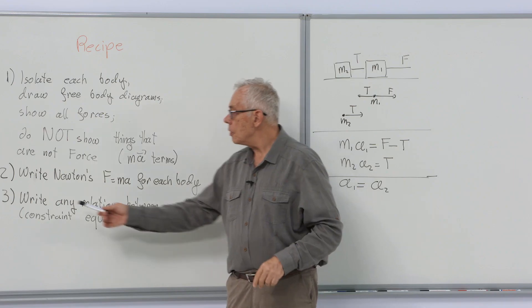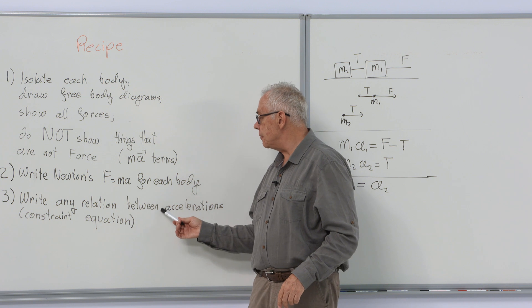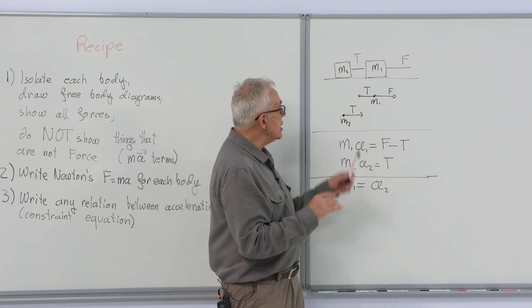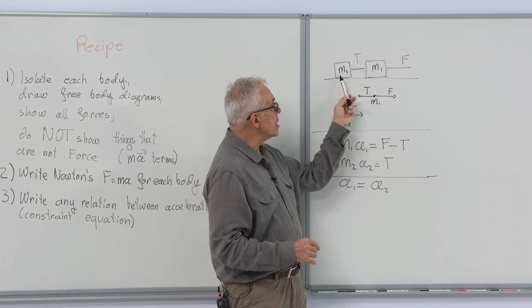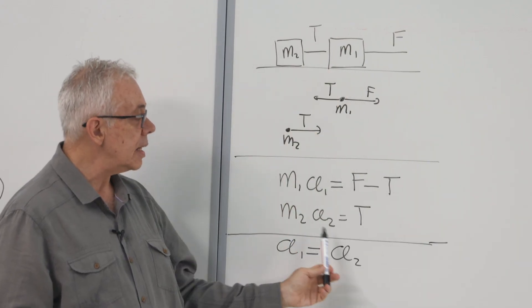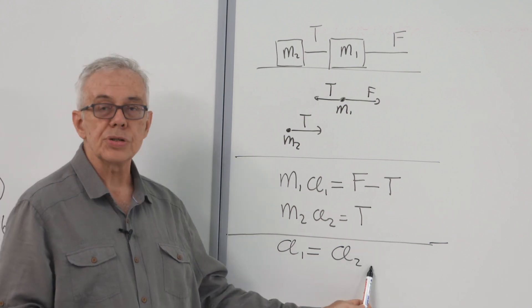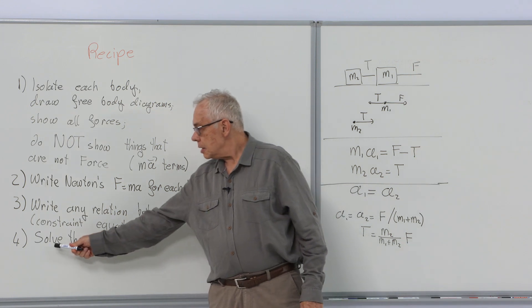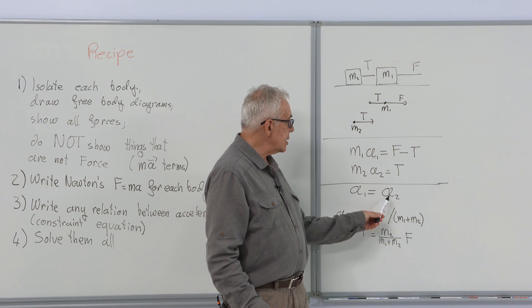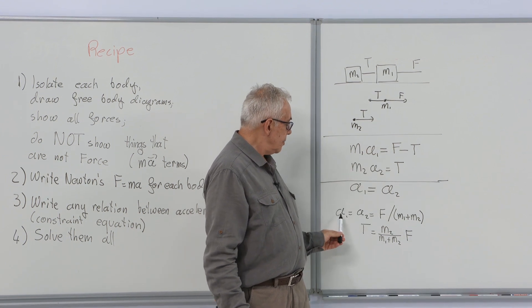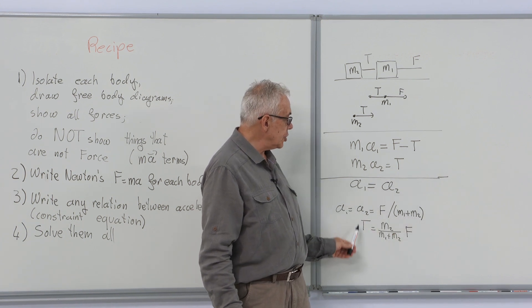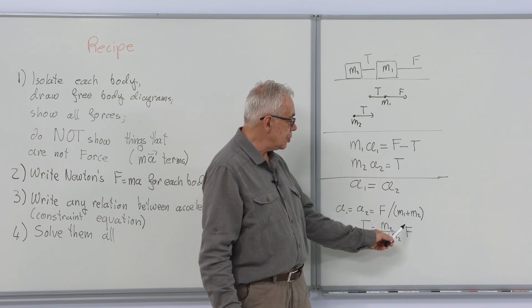For this, we will look for some relation between accelerations. These are called constraint equations. In this case, the bodies are moving together, so the acceleration of the first mass and that of the second mass are equal. This is our constraint equation. And then we solve all of these equations. Noting that the accelerations are equal and adding them up, we will see A1 equals A2, F over M1 plus M2, and tension is M2 over M1 plus M2 times F.